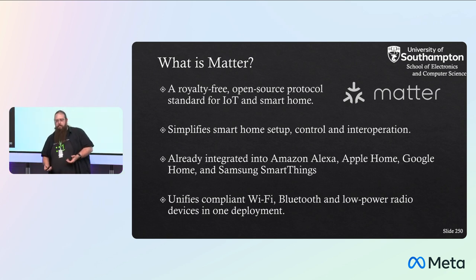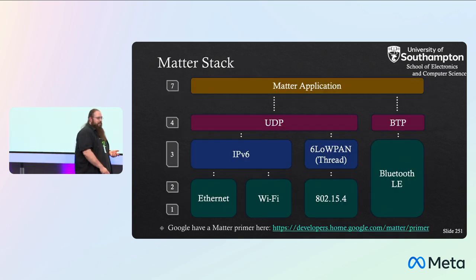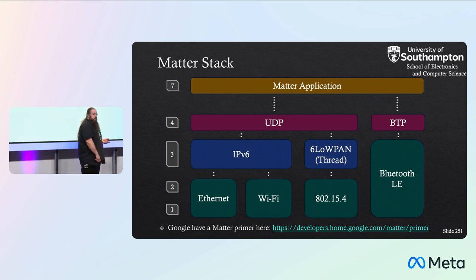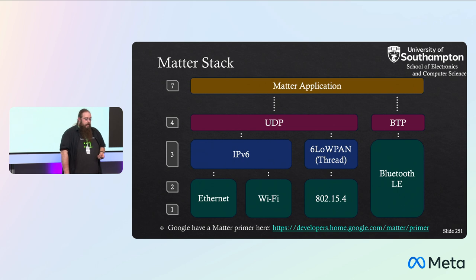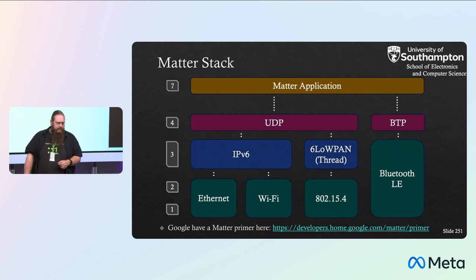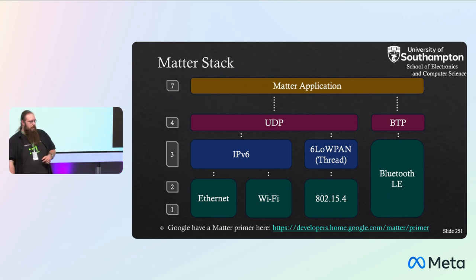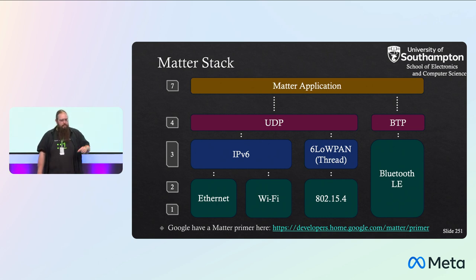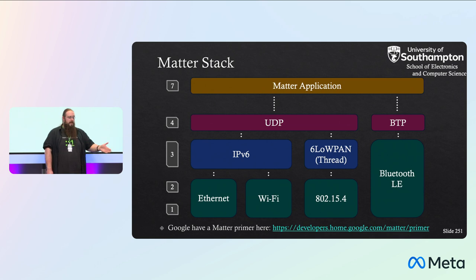On the technical level, Matter is pretty much a stack with options on what you're running at different levels. It will work with Ethernet, Wi-Fi, 802.15.4, or even Bluetooth. It's all 6LoWPAN on the Wi-Fi, Ethernet, and 802.15.4 side, runs with UDP, and then standardizes the Matter application on top. Once you've got the stack running, it doesn't matter where your device is — it will just integrate into your network.